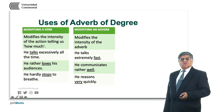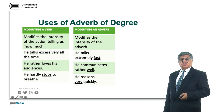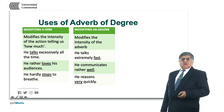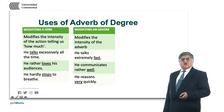When an adverb of degree modifies an adverb, it modifies the intensity of the adverb. He talks extremely fast. He communicates rather well. He reasons very quickly. Fast, well, and quickly are the adverbs that are modified, and the adverbs of degree that modify them are extremely, rather, and very.